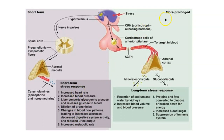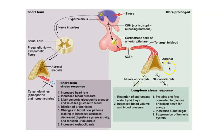For chronic stressors, the hypothalamus still picks up the chronic stress the body is feeling. The hypothalamus — which controls the pituitary gland — releases corticotropic releasing hormone (CRH). That travels in the blood to the anterior pituitary gland, which then releases ACTH, which travels in the blood to the adrenal cortex. Then you have these long-term stress responses.